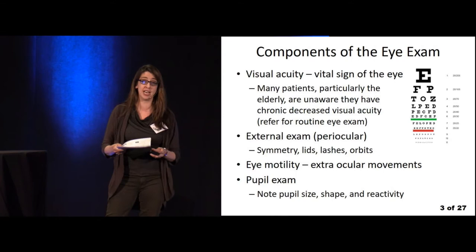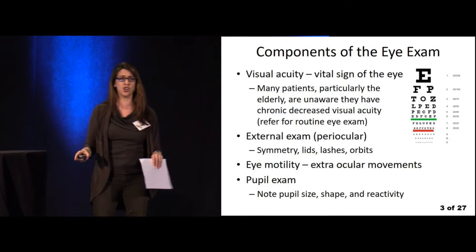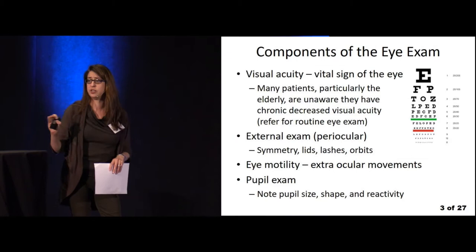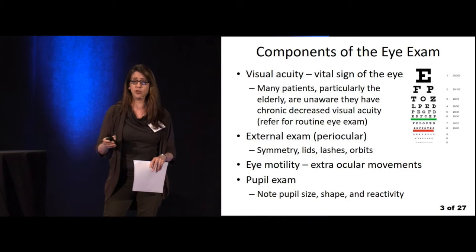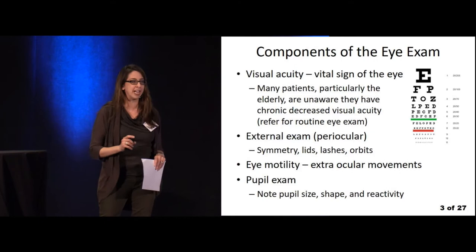You want to make sure to do a good external exam. Look for symmetry, look at the lids, make sure the lashes are all intact and there are no lacerations. Note that extraocular movement is intact, then take a good look at the pupil — make sure it is not irregular and not peaked.